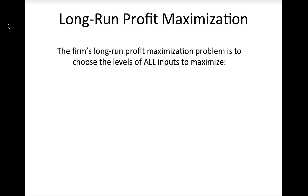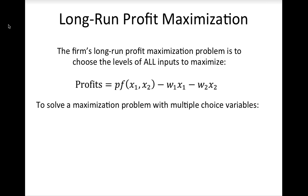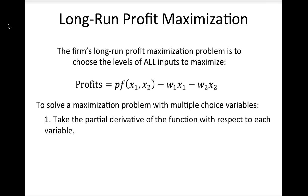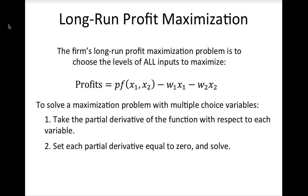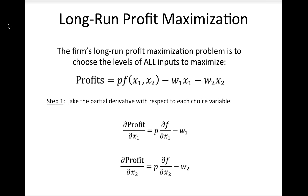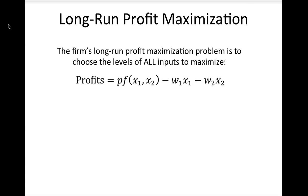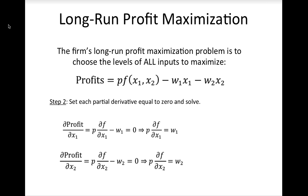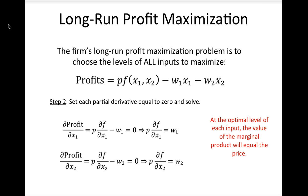In the long run, all inputs are variable. This problem has two choice variables, X1 and X2. To solve a maximization problem with multiple choice variables, first take the partial derivative of the function with respect to each variable, then set each partial derivative equal to zero and solve. Note that the equations describing the optimal amount of each input look very similar to the short-run case: at the optimal level of each input, the value of the marginal product will equal the input price.